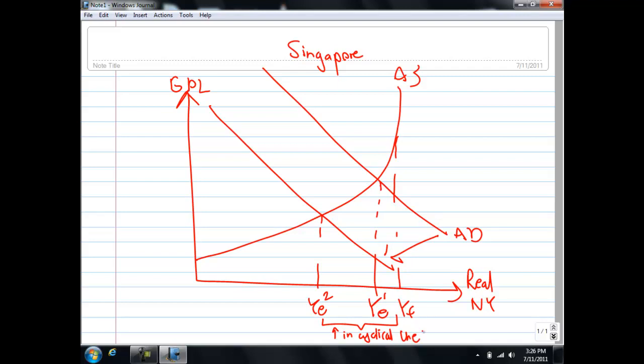One obvious policy is to use an expansionary demand management policy to push the AD2 curve back to AD1. But we all know that in Singapore, demand management policies do not work as well. Why is that the case?